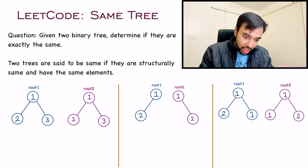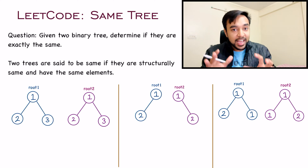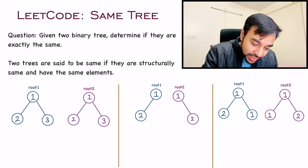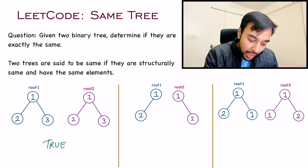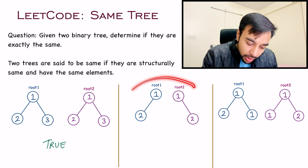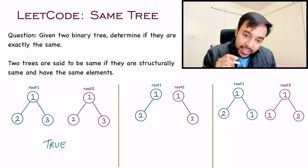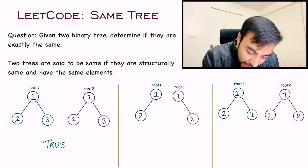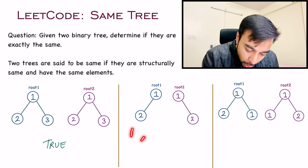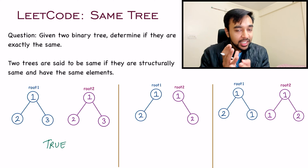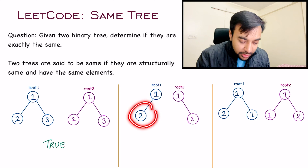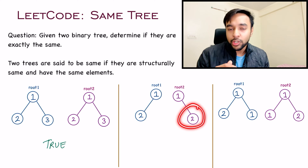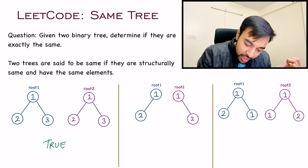Even in this structure, all the elements are at the exact same position. So for this particular test case, you will return true as your answer. Now moving on, let us look at our second test case. Although we have the same elements one, two and one, two, you can see that the structure of these two trees is not the same. In this case you have a left node and in the other case you have a right node. So for test case number two, you are going to return false as your answer.